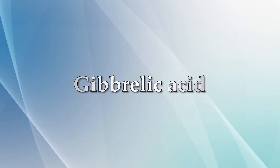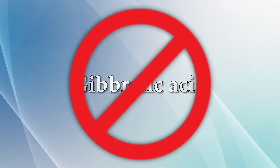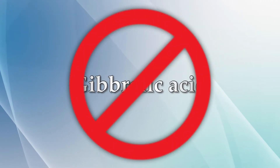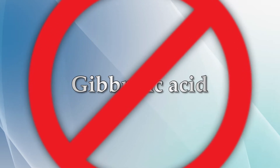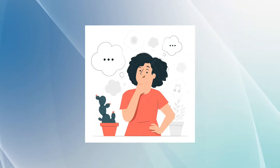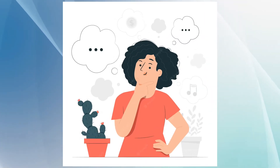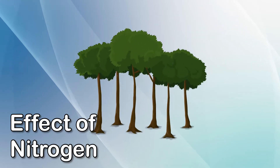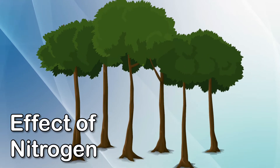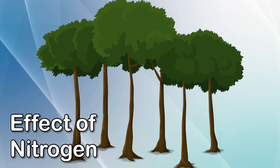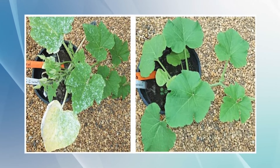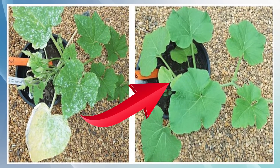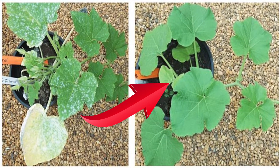Copper suppresses gibberellin, therefore the effect of gibberellic acid does not appear after spraying copper. Copper is also used for chemical thinning. Copper also reduces the effect of nitrogen, which causes the leaves of the crop to firm up, resulting in fewer diseases on the crop.